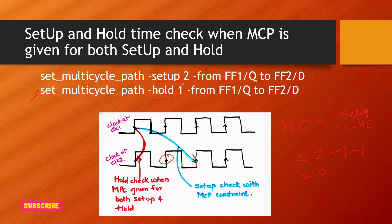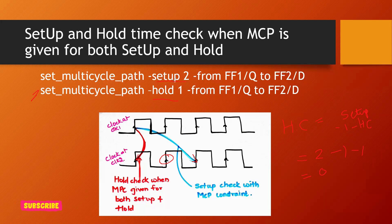The reason hold is checked at the launch edge (cycle 0) is that we want to ensure the transmitted data is stable at the moment of launch and does not change while waiting to be captured. We are holding the same data for the entire duration until it reaches the capture flop. This combination of setup and hold constraints correctly defines the multi-cycle path behavior for the STA tool.